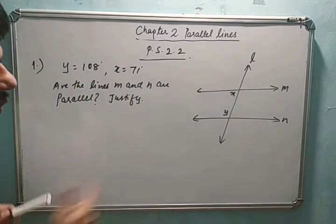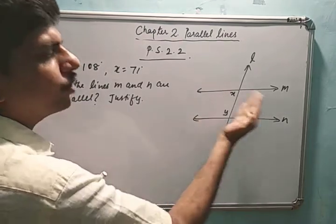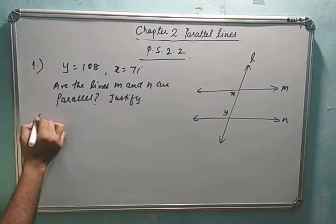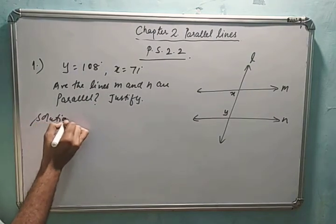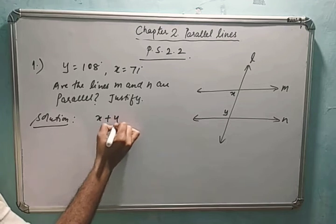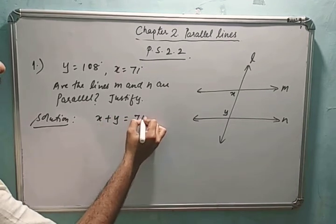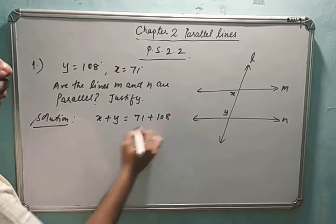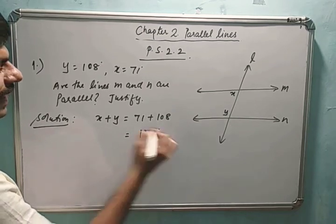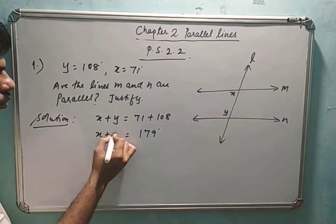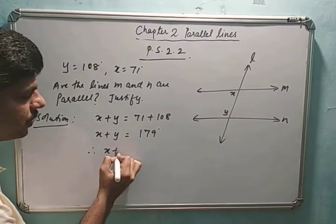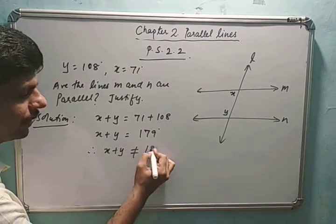You can see that x and y are on the same side of the transversal, so let's find out their sum. In the solution: x plus y equals 71 plus 108, which gives 179 degrees. So x plus y is 179 degrees, which means x plus y is not equal to 180 degrees.